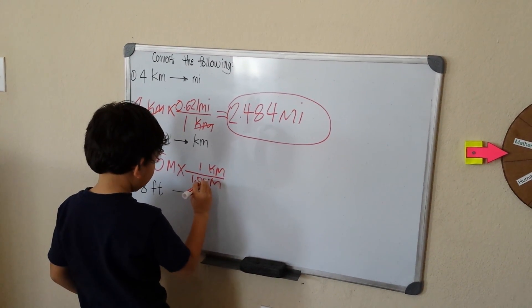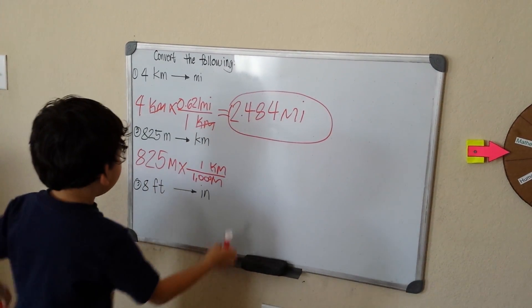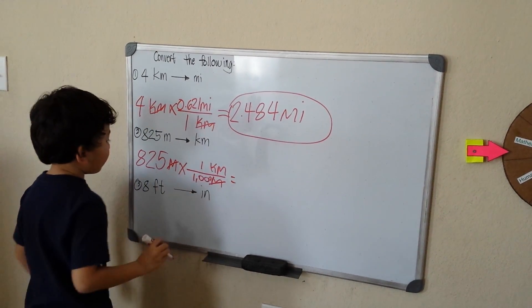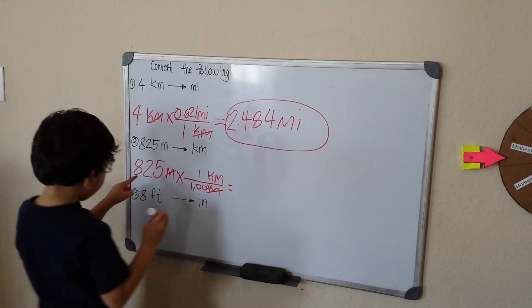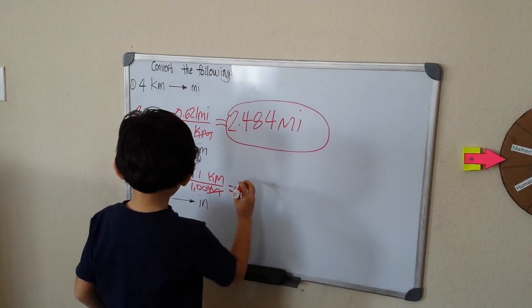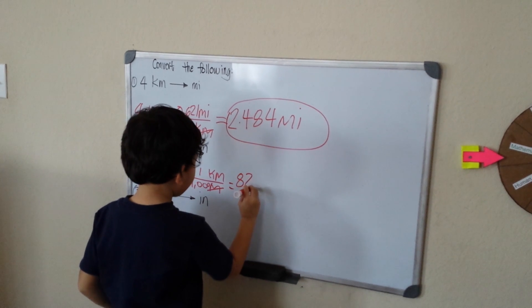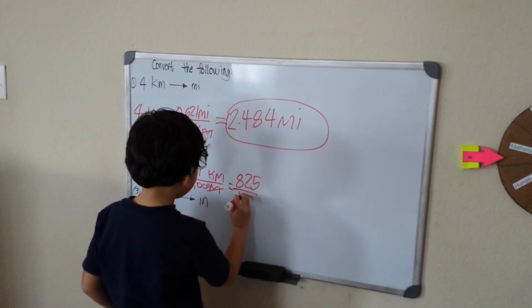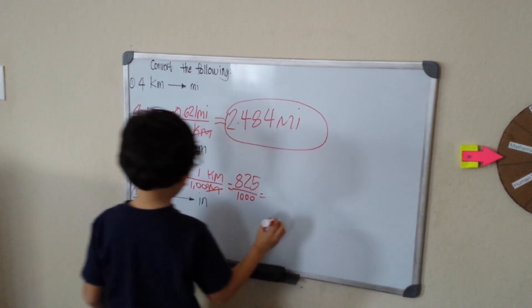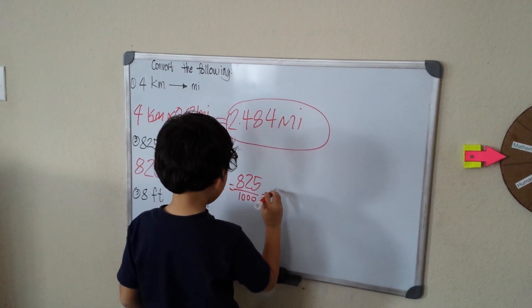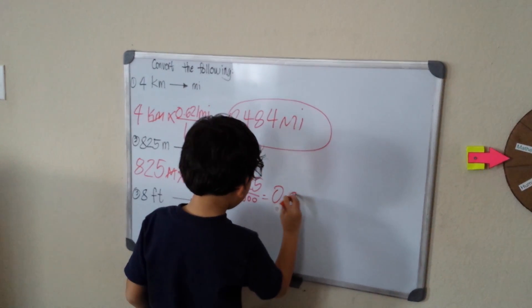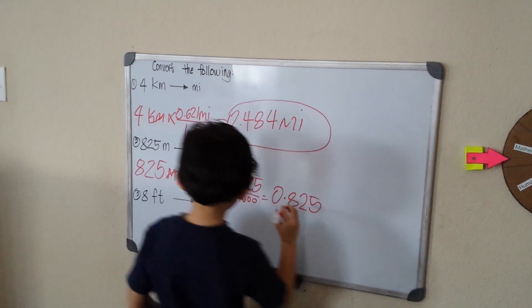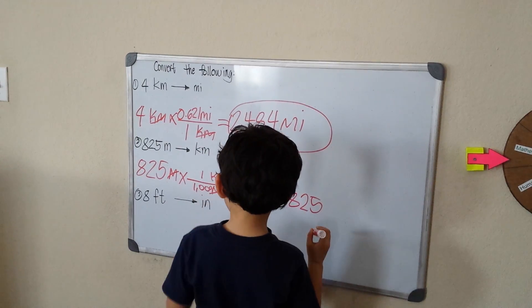So, what does that equal? Cross these two. So, this is down. So, 825 divided by 1,000 equals 0.825 kilometers.